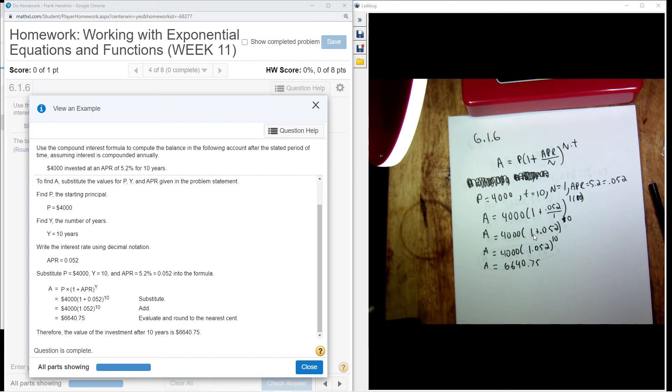Then I simplify what's inside the parentheses. So I have 1.052 to the 10th power, and then multiply it by $4,000, and it gives me this value here.